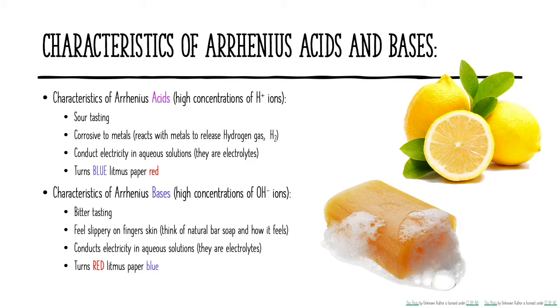Bases turn red litmus paper blue. If you have red litmus paper and touch it to a base, it will turn blue. If you have blue litmus paper and touch it to a base, it stays blue. It's easy to remember: blue for base and red for acid.